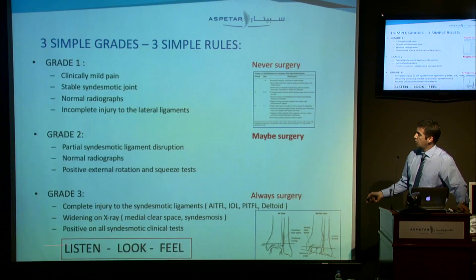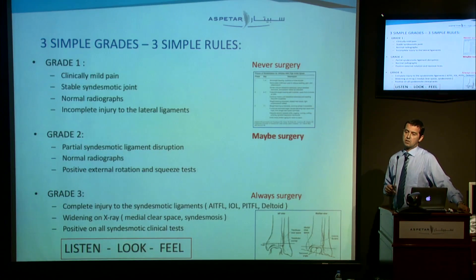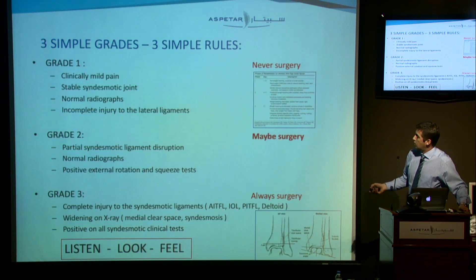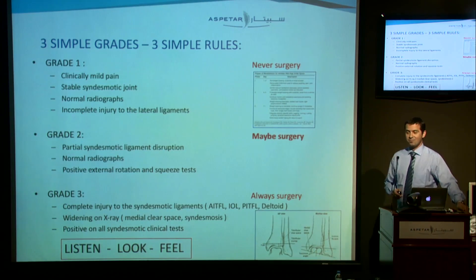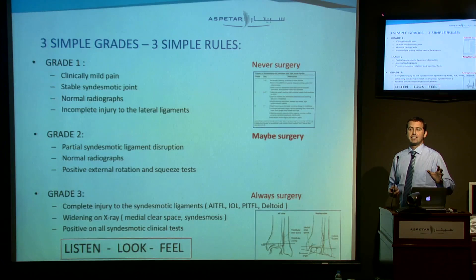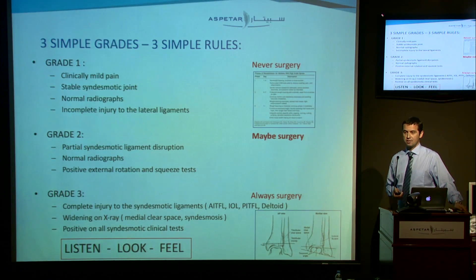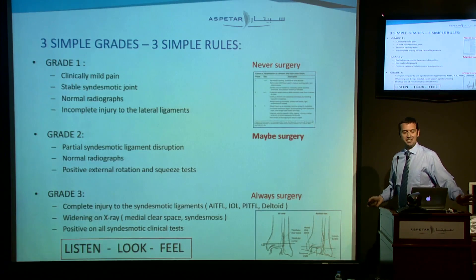Grade three is where you have a complete mess: from the medial side deltoid all the way over the cartilage to the distal side, with posterolateral and anterolateral ligament issues. Grade three — always surgery. Grade two: how many percent of all non-fractured, athletic-induced injuries are grade two in syndesmosis? About 89%. So grade one — never. Grade three — always. But the problem is, it's always a mess because of grade two — maybe.